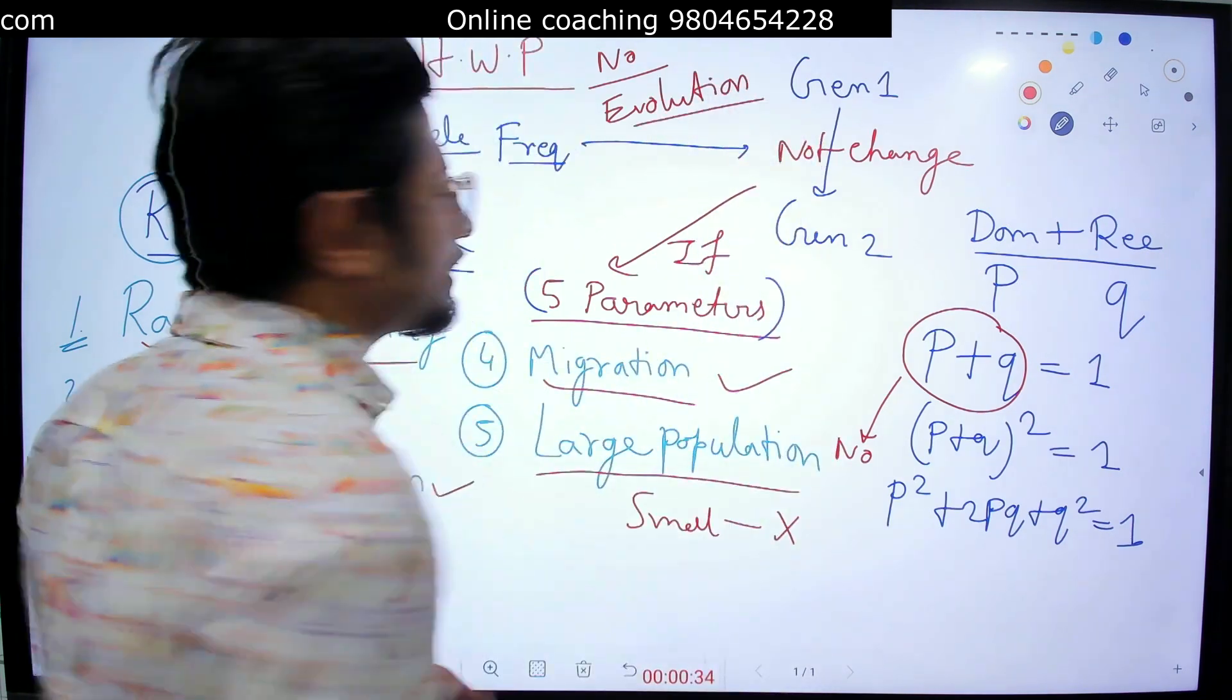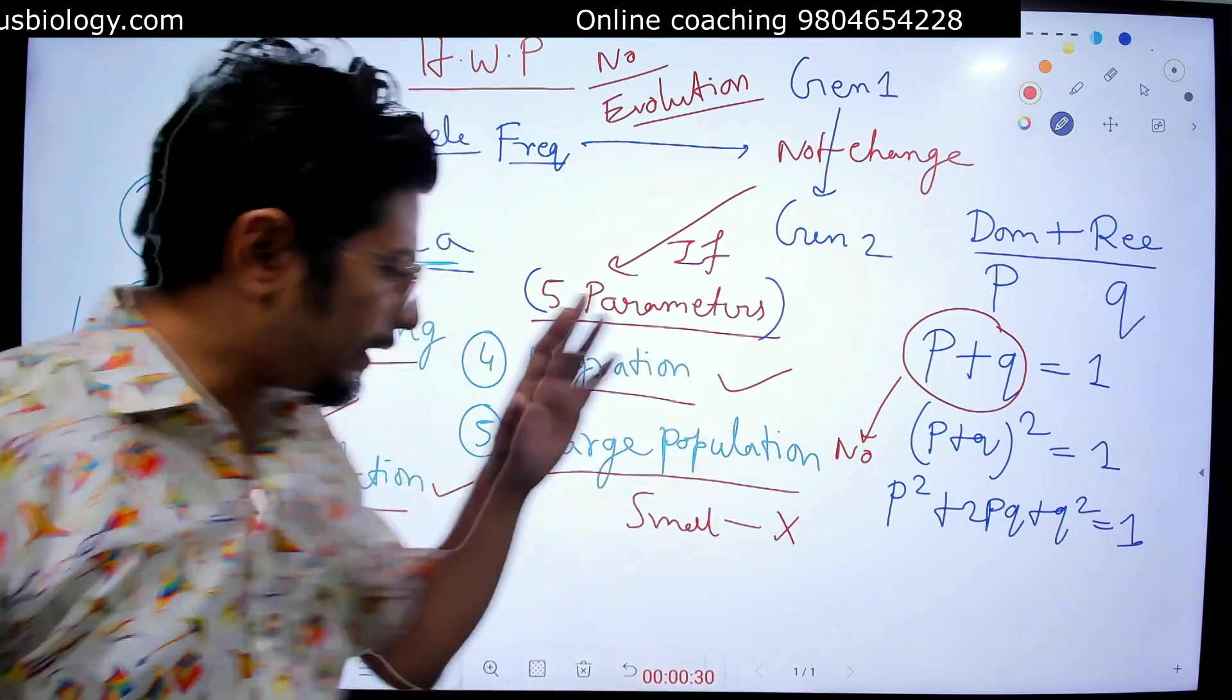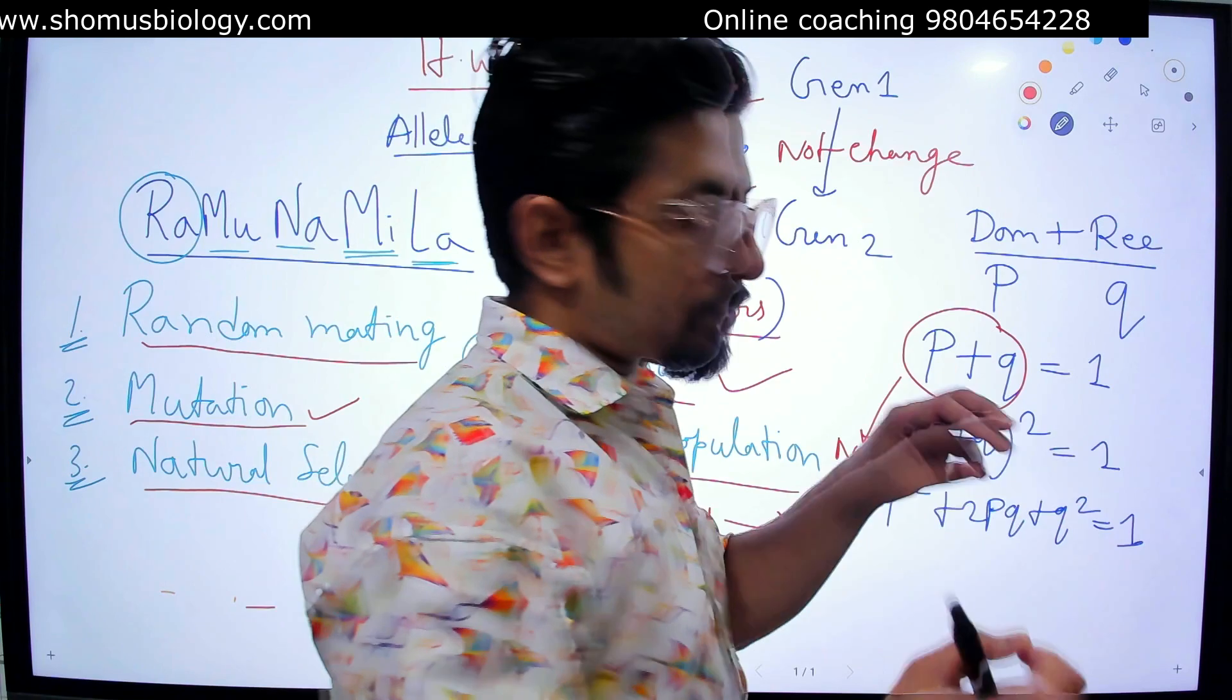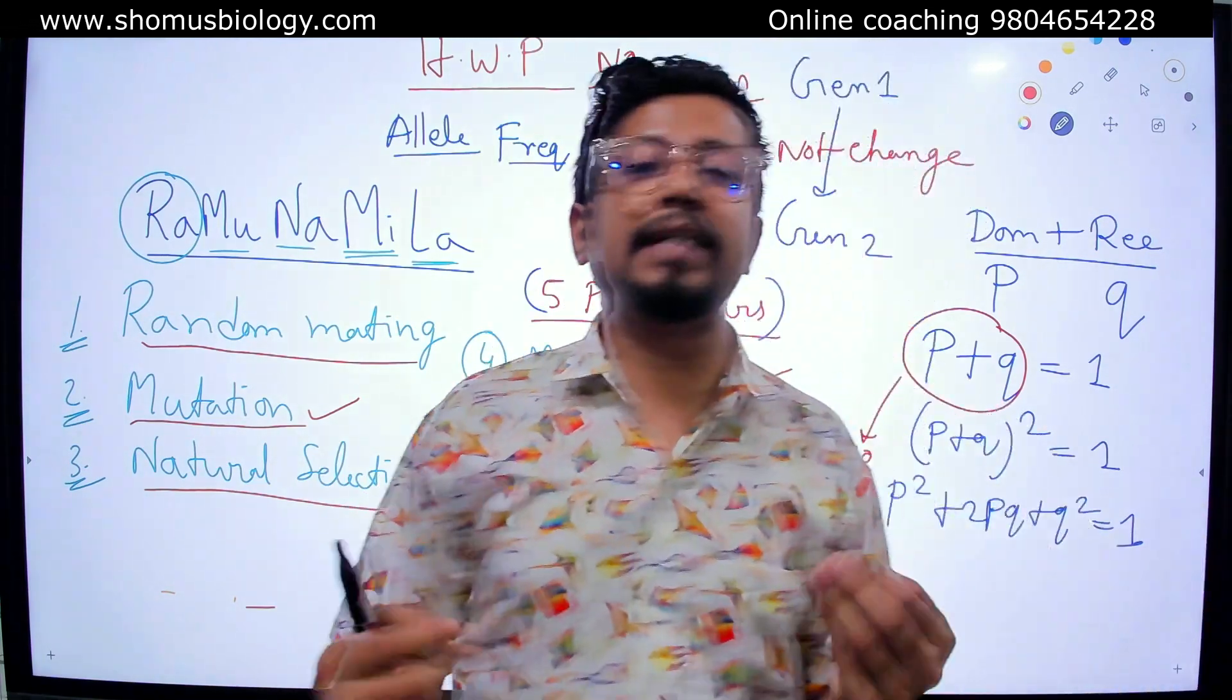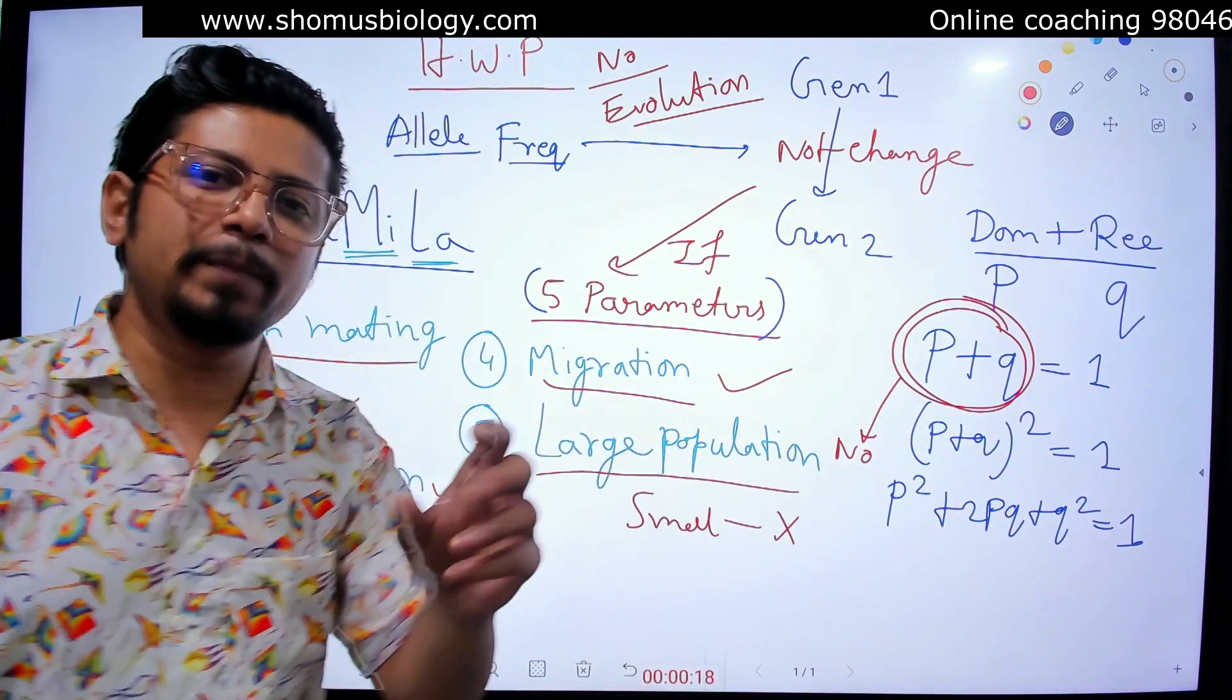So how to remember Hardy-Weinberg principle easily. Ramunamila. All the five parameters are mentioned in here. If you remember that, you will never ever forget Hardy-Weinberg principle. What does that signify. And you know, the allele frequencies will remain conserved with time. So I rest my case.